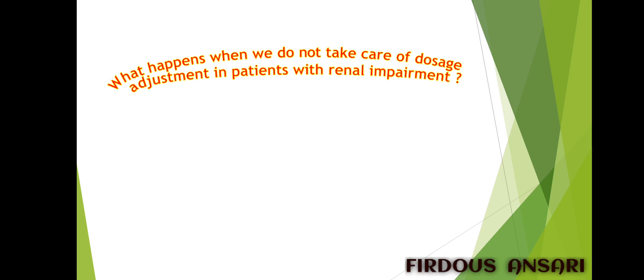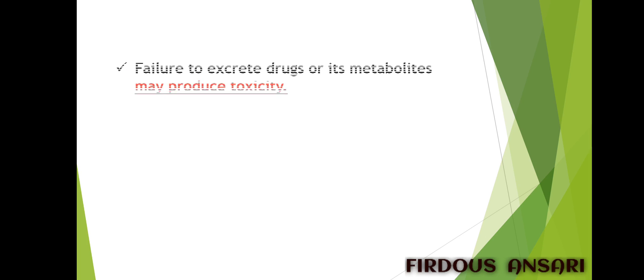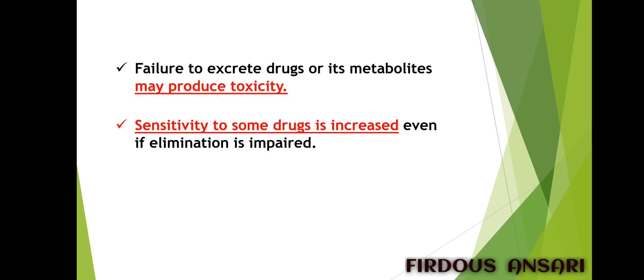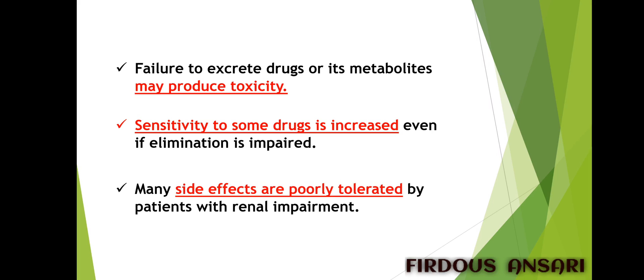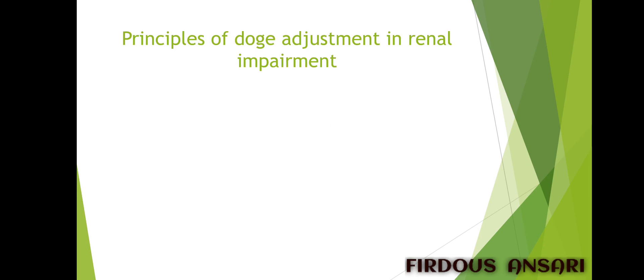What happens when we do not take care of dosage adjustment in patients with renal impairment? First, failure to excrete drugs or their metabolites may produce toxicity. Second, sensitivity to some drugs is increased even if elimination is impaired. Lastly, many side effects are poorly tolerated by patients with renal impairment. These are the three manifestations we can see when we give a normal usual dose of a drug to a patient with renal impairment whose kidneys are not working properly.